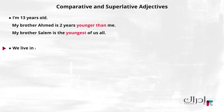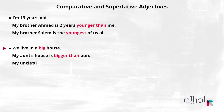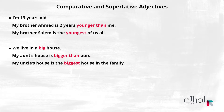We live in a big house. My aunt's house is bigger than ours. My uncle's house is the biggest house in the family. In the second sentence, the speaker is comparing two houses only. In the last sentence, the speaker is comparing all three houses.